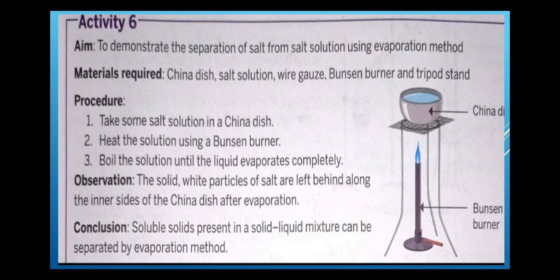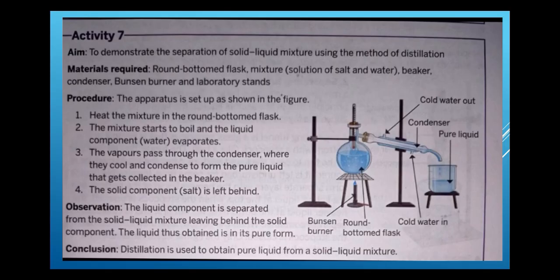The previous methods apply when the solid is insoluble in water. Now we look at methods for when the solid is soluble in water. To separate salt from a salt solution, the evaporation method is used. The salt solution in a china dish is heated with a Bunsen burner and boiled until the liquid evaporates completely. The solid white salt particles are left behind on the inner side of the china dish. This is called the evaporation method.